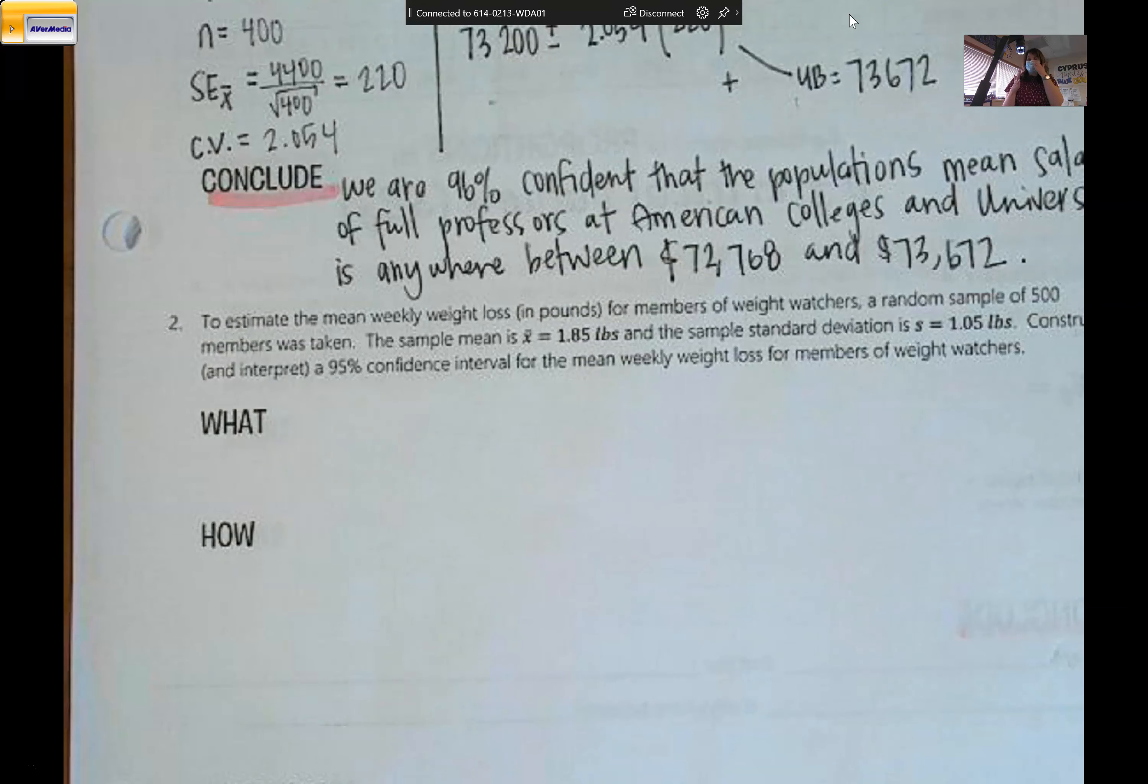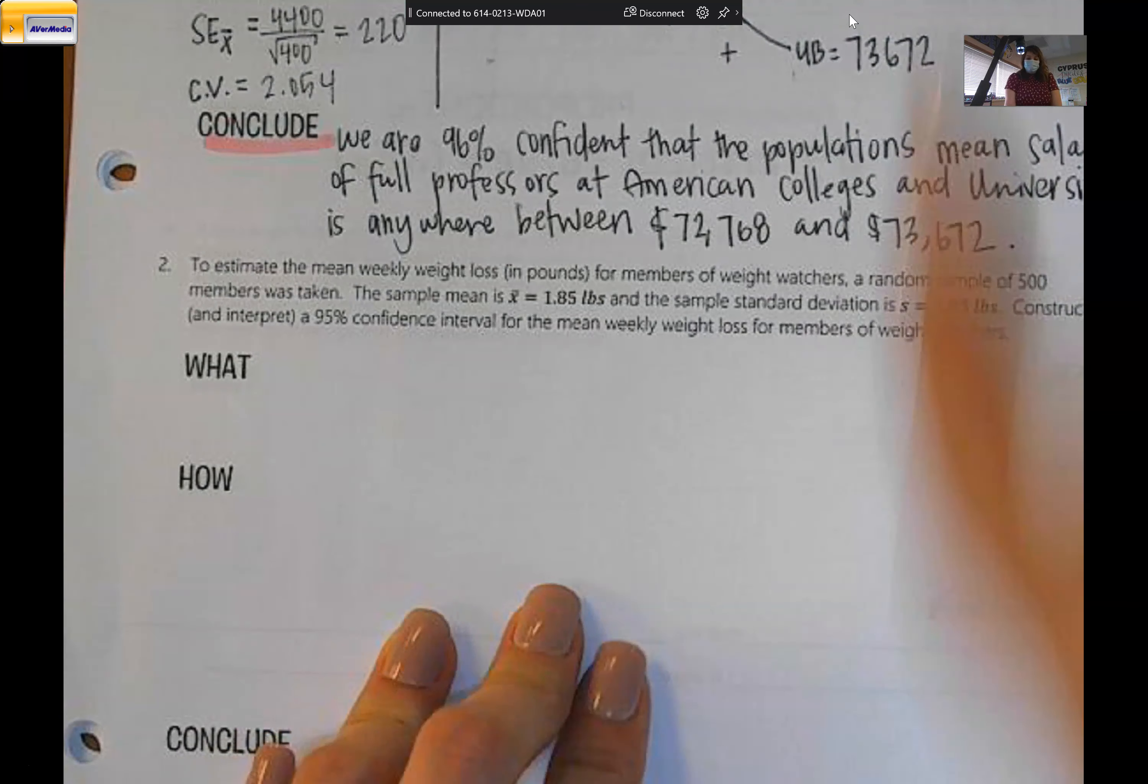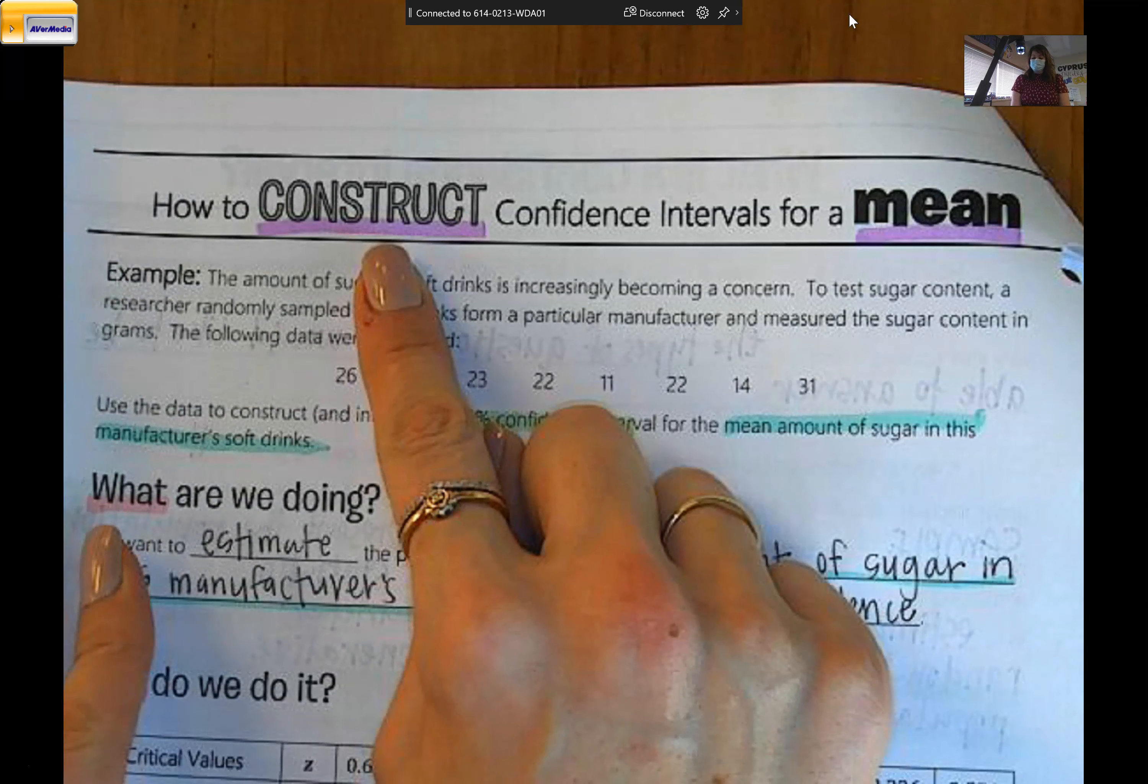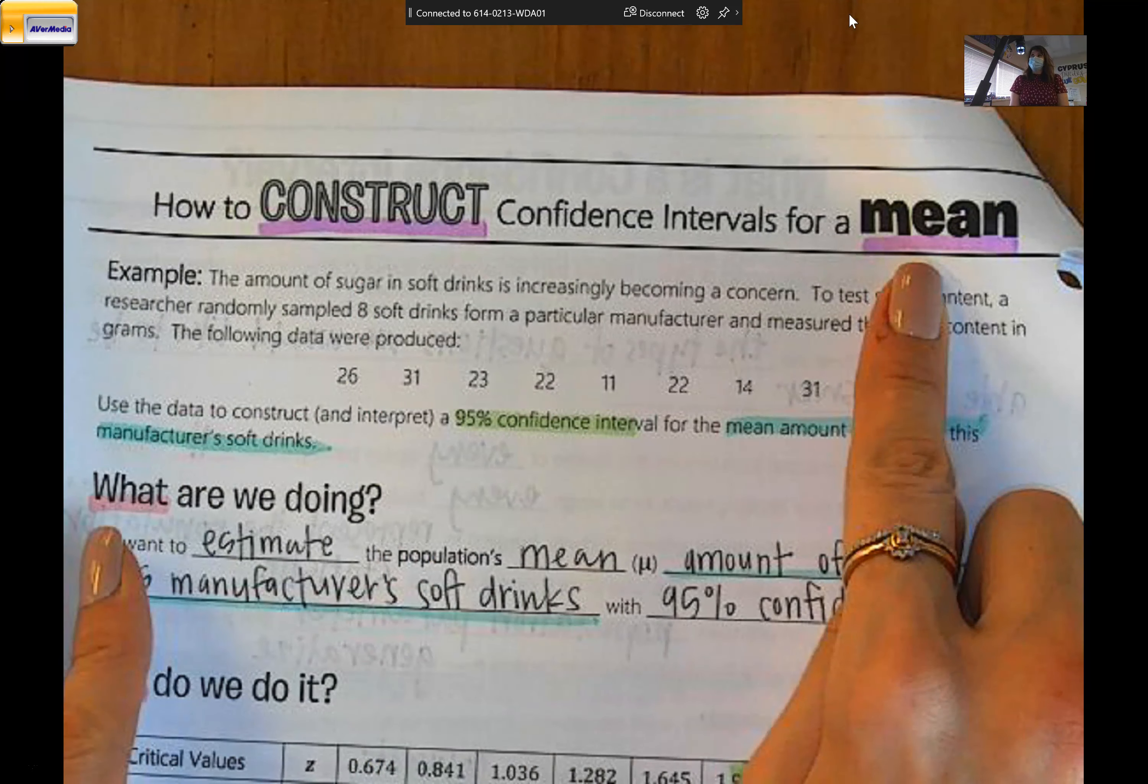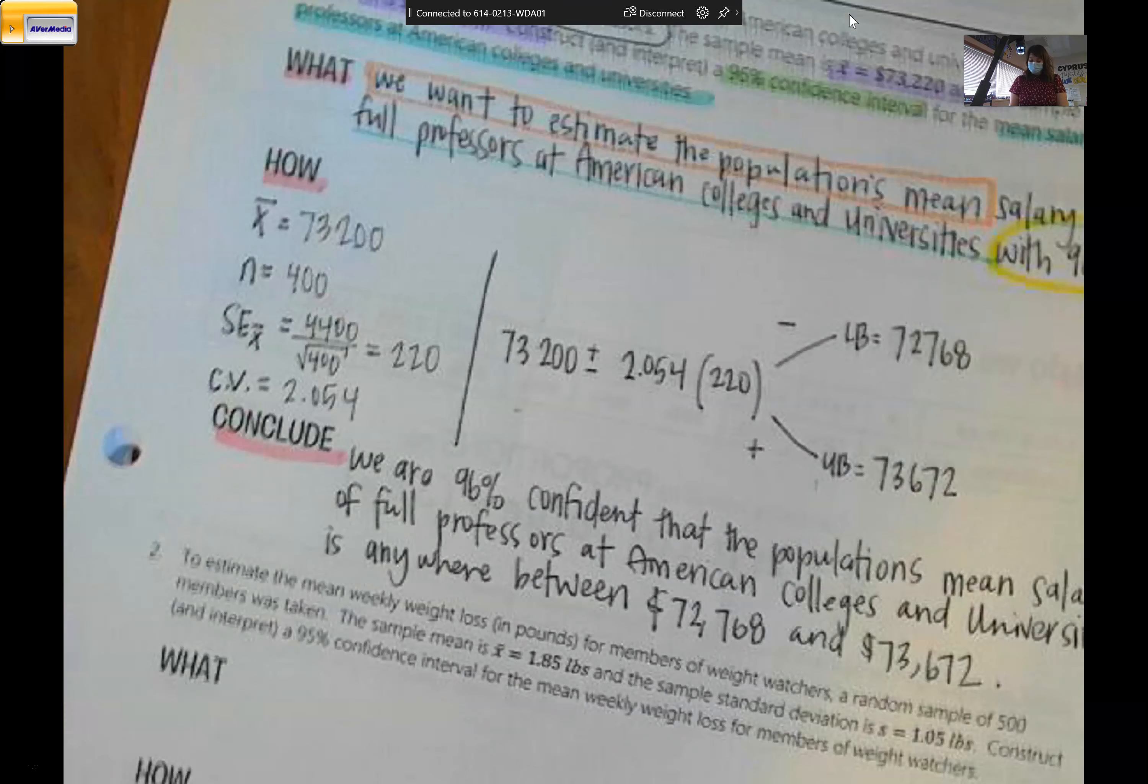We just did confidence intervals for a mean, and now we're going to look at confidence intervals for a proportion.